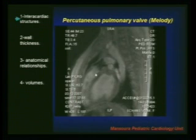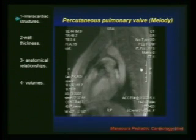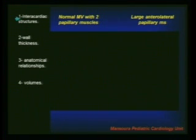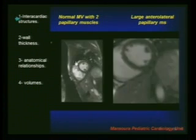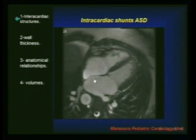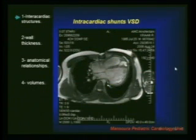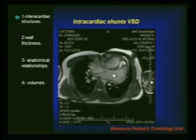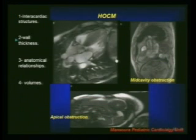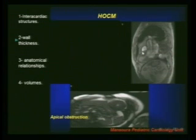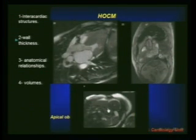Here is a new technique with percutaneous implantation of a pulmonary valve — the Melody valve. We can see intracardiac structures like a large single papillary muscle compared to a normal two-papillary-muscle configuration. We can also visualize intracardiac shunts like ASD, quantify the lesions, and define the borders before sending the patient to the cath lab for ASD closure. Here is a left-to-right ventricular shunt — VSD. Also shown is HOCM, which is obstruction of the left ventricular outflow tract, mid-cavity obstruction, or concentric left ventricular hypertrophy.